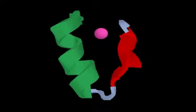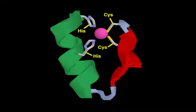The zinc atom is coordinated by two cysteine residues from the beta sheet and two histidine residues from the alpha helix.